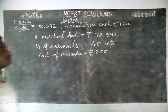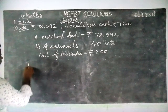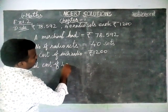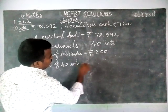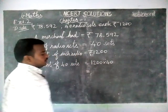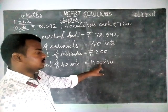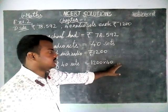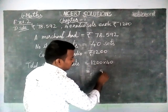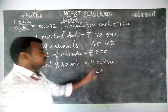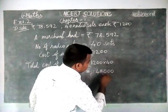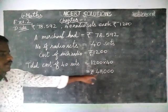Now we have to find the total cost of 40 sets. Total cost of 40 sets is equal to 1,200 multiplied by 40. Here we have one zero and two zeros. When we have zeros at the last place, first we multiply the numbers alone, then we add the zeros. Four twos are 8, four ones are 4, so 12 times 4 is 48. We have three zeros total, so we add three zeros — the cost of 40 sets is Rs. 48,000.